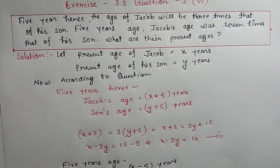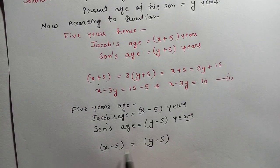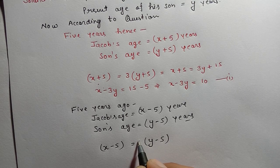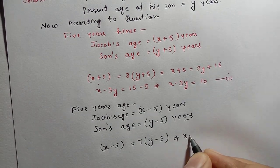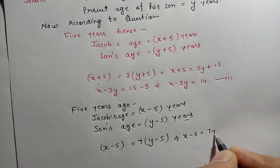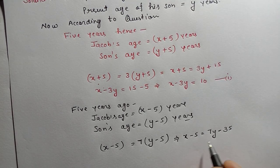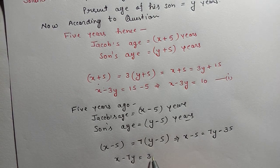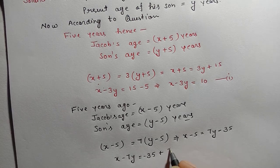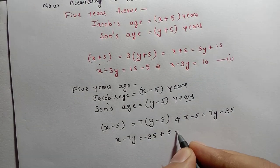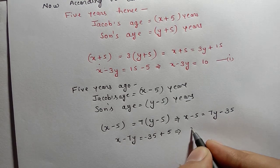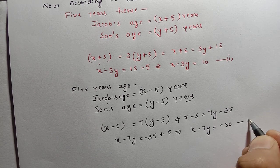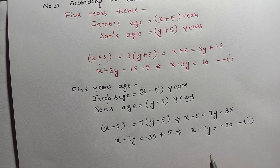The condition says Jacob's age was seven times that of his son. To balance the equation, we multiply on the son's side. So: x − 5 = 7(y − 5), which gives x − 5 = 7y − 35. Rearranging: x − 7y = −30. This is Equation 2.